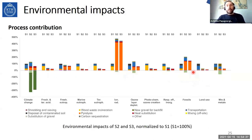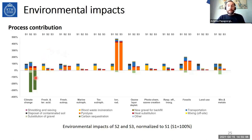Looking at process contributions, for the dig and dump scenario, impacts are due to transportation and incineration. For the biochar scenarios — scenarios two and three — the benefits from carbon sequestration in the biochar are substantial, shown in green, while other impacts come from transportation or pyrolysis.